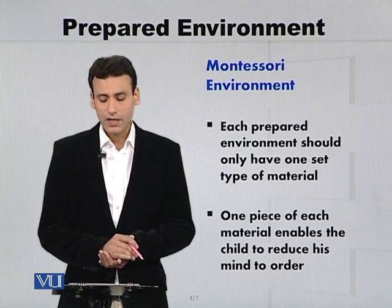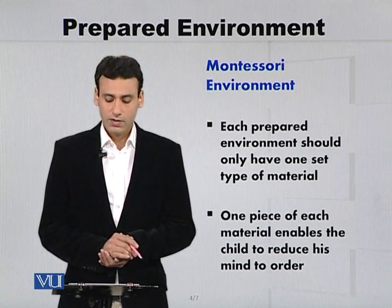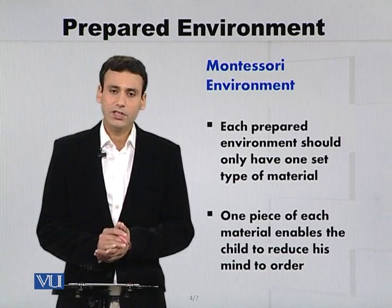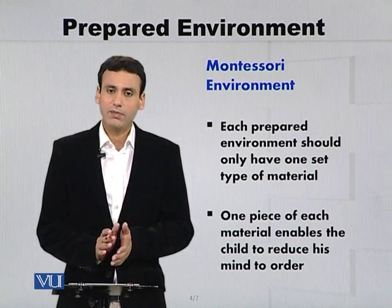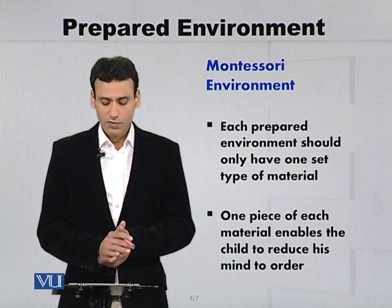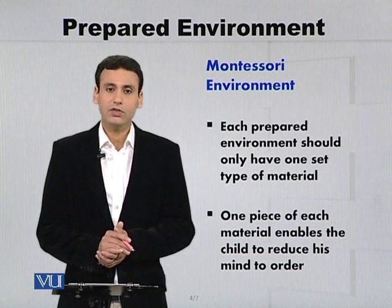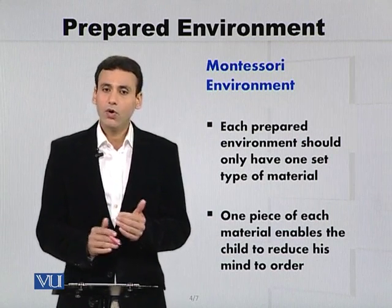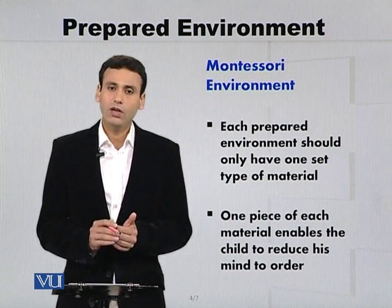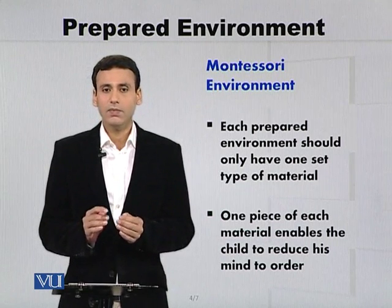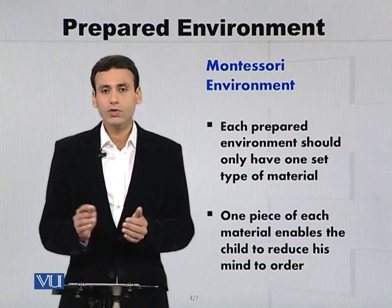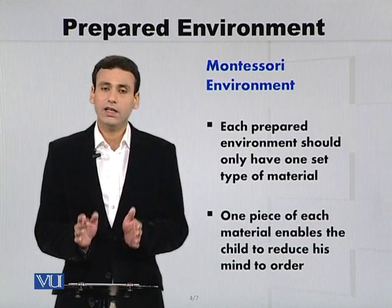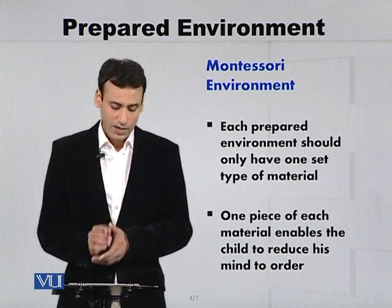اب اس کے اجزاء کیا ہیں؟ Each prepared environment should only have one set type of material. ہر ایک prepared environment کے اندر جو materials ہیں وہ ایک ہی طرح کے ہوں، کیونکہ one piece of each material enables the child to reduce his mind to order — small to big، light to dark، long to short۔ یہ سب باتیں ایک بچہ اس وقت سیکھے گا جب وہاں ایک ہی طرح کا material ہوگا۔